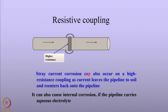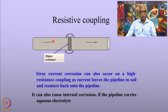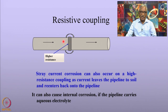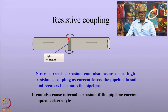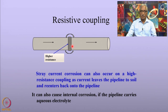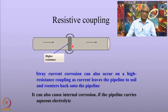There is another kind of stray current corrosion different from what we have seen so far. Assume there is a coupling joining two segments of a pipeline that offers higher resistance. As a consequence, a current leaves this pipeline into the soil and reenters the pipeline at the other end. Where the current leaves, the pipeline suffers corrosion. It is also important to notice that when you have such a resistive coupling, internal corrosion can also occur because the current can jump within the pipeline.